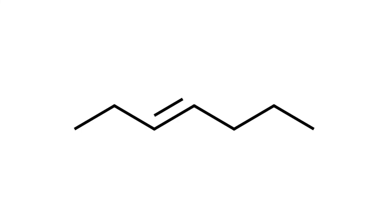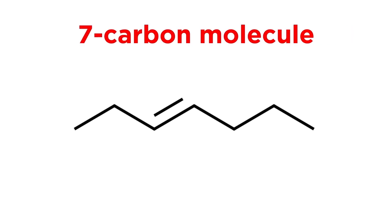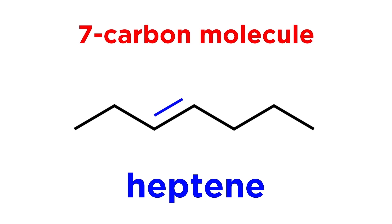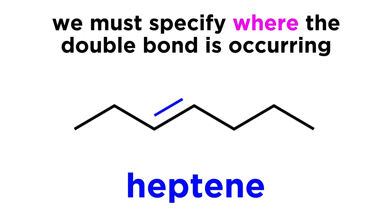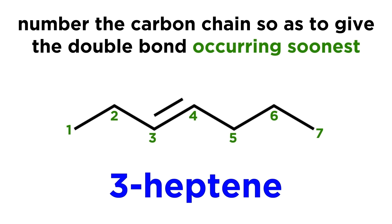The rules we know for nomenclature of alkanes will all remain the same when looking at alkenes, but now the suffix of the molecule will be '-ene'. Take this molecule for example. We see that there are seven carbons, but because there is a double bond, this will now be a heptene. We have to specify precisely where the double bond is occurring on the molecule, or it would be ambiguous. So we will number the carbon chain so as to give the double bond occurring soonest — that will be left to right, as that gives the double bond starting on carbon 3, as opposed to carbon 4 if we went the other way. So this is called 3-heptene.